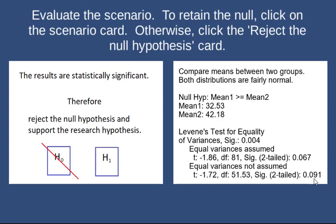Another way of thinking about this: instead of dividing 0.091 in half to compare to 0.05, you could just compare it as-is to 0.1 — and it's less than 0.1. If that trick helps, great. Otherwise, just divide the significance two-tail in half any time you're dealing with a one-tail test and compare it to your alpha level of 0.05. Since we reject, click on the reject card.